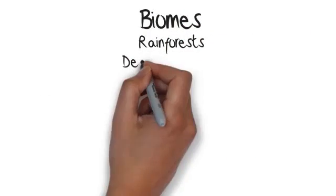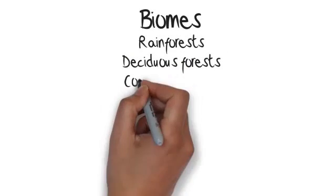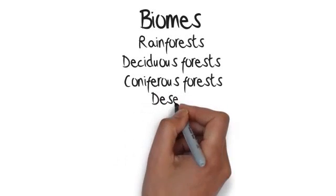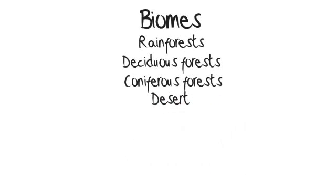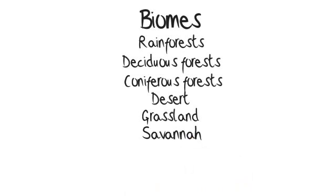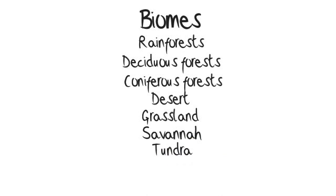Rainforests, deciduous forests — forests where the trees shed their leaves — coniferous forests — forests where the trees keep their leaves or needles year round — desert, grassland, savannah, tundra, mountains and Mediterranean.